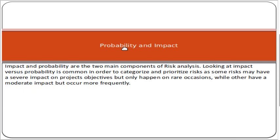We shall discuss these two components one by one. The probability and impact matrix is a tool used for risk analysis. Whenever we are identifying or analyzing risk, we use this tool. Looking at impact versus probability is common in order to categorize and prioritize risks, because some risks may have a severe impact on project objectives but only happen on rare occasions, while others have a moderate impact but occur more frequently.